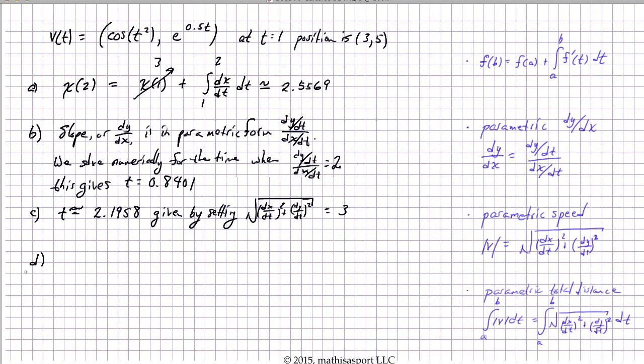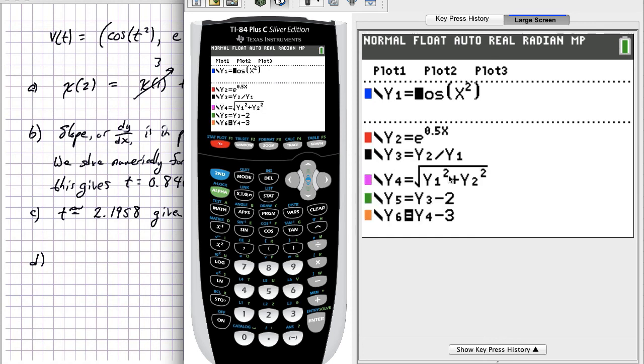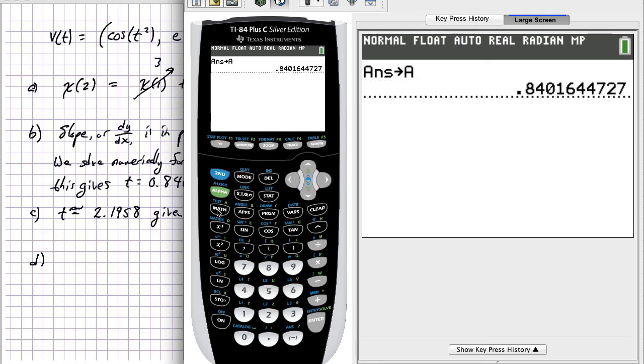Part d: we're looking for the total distance traveled. Well, the total distance traveled is in fact just the integral over the time interval of the absolute value of the velocity. And so we're going to use that same expression for velocity that we just used in part c, but now we're just going to integrate between 0 and 1. So again, let's go back and look at those equations. Y4 is where we've stored the speed, and so we're going to do that integral from 0 to 1.